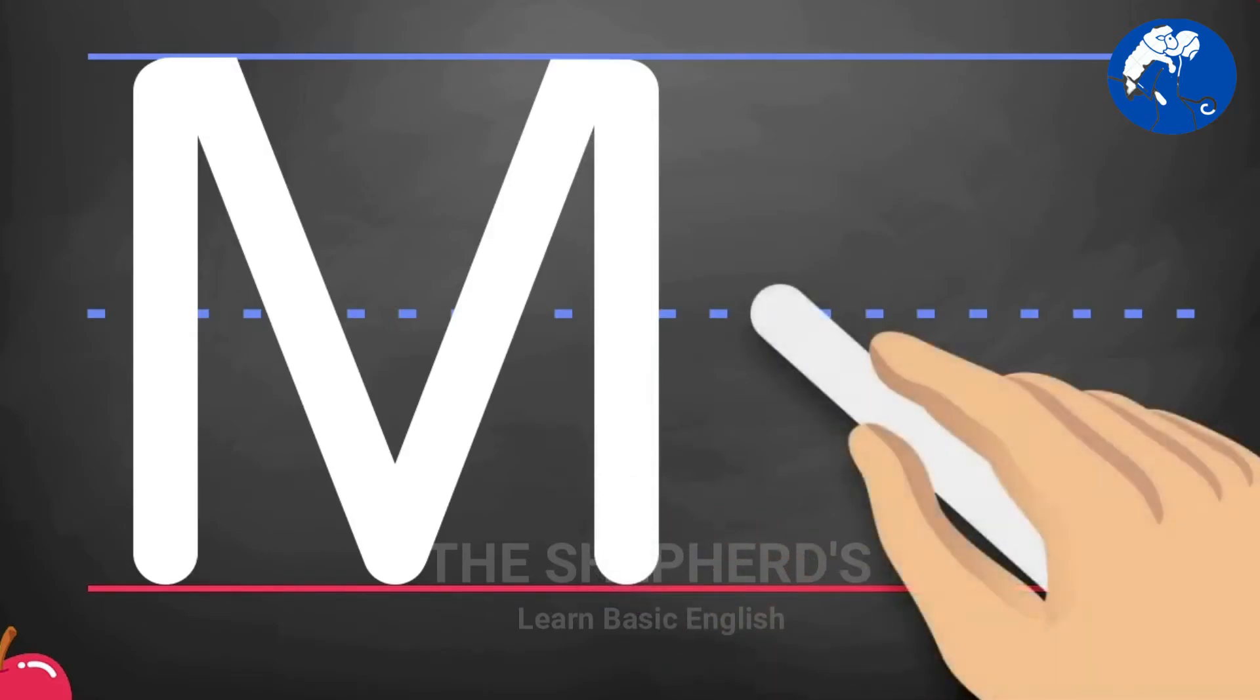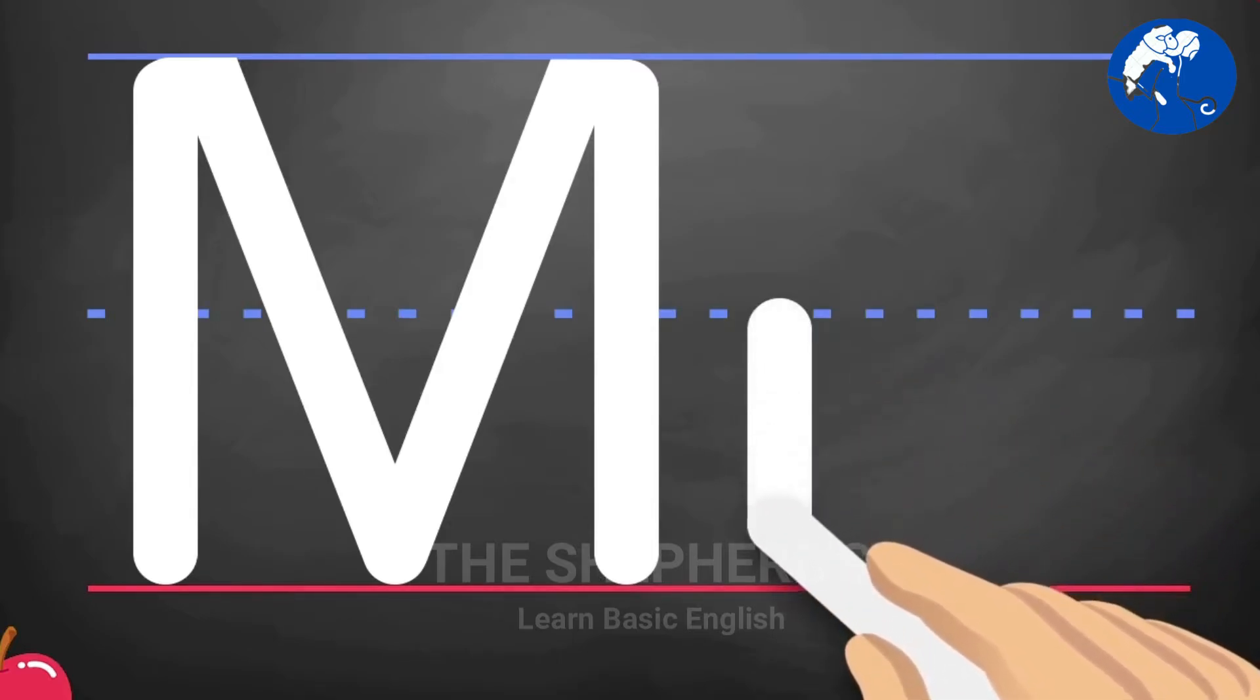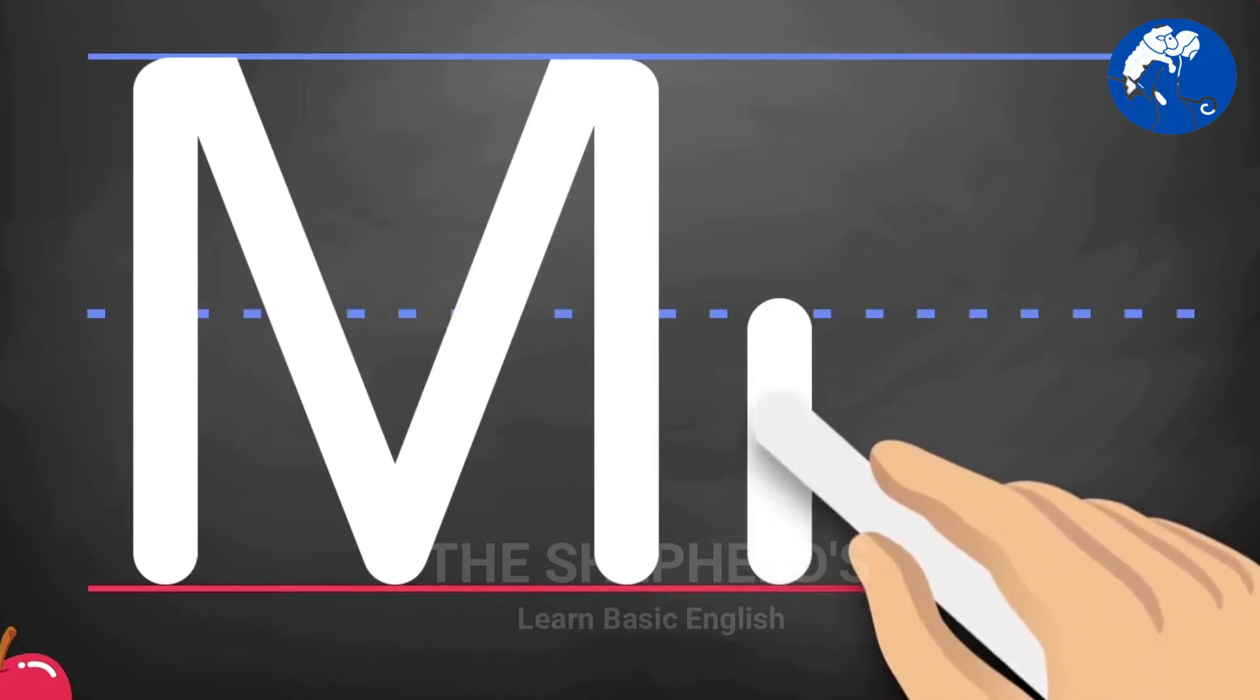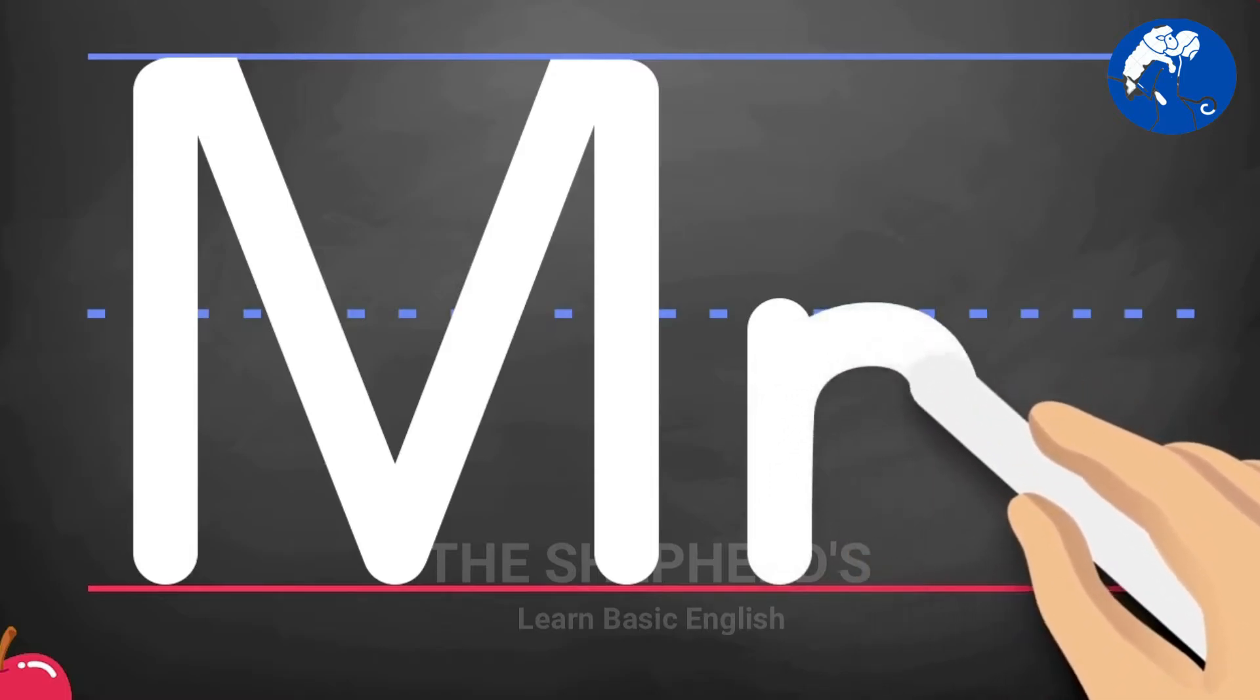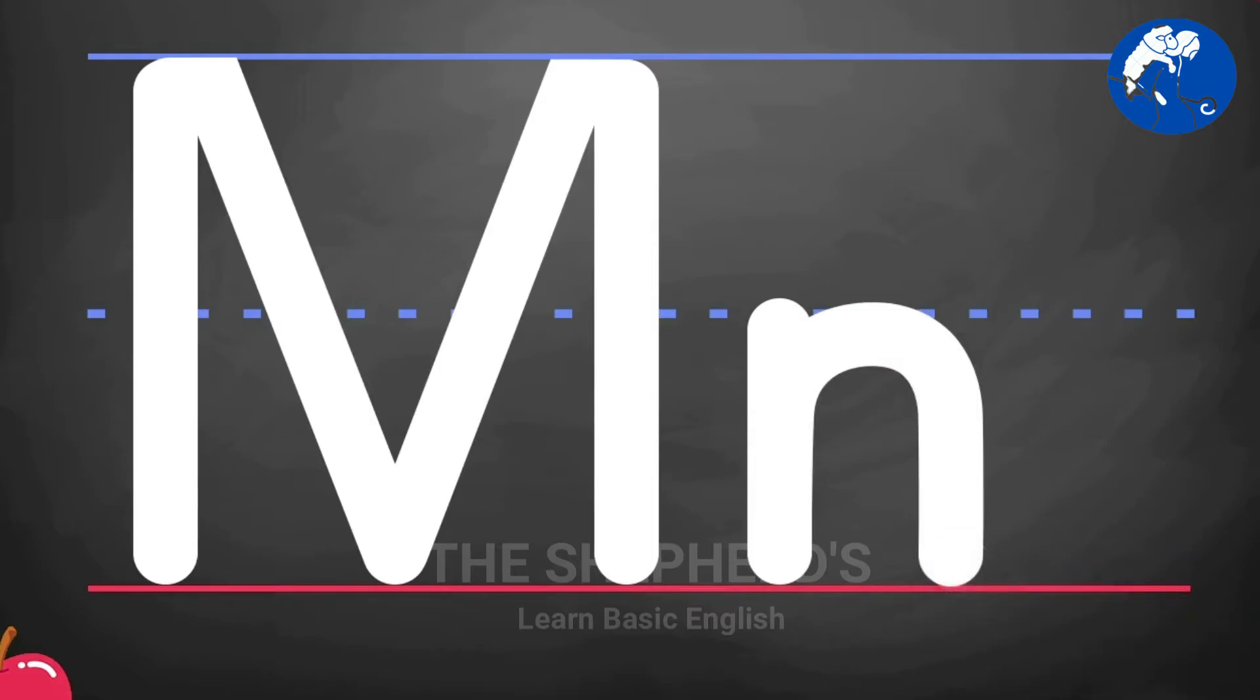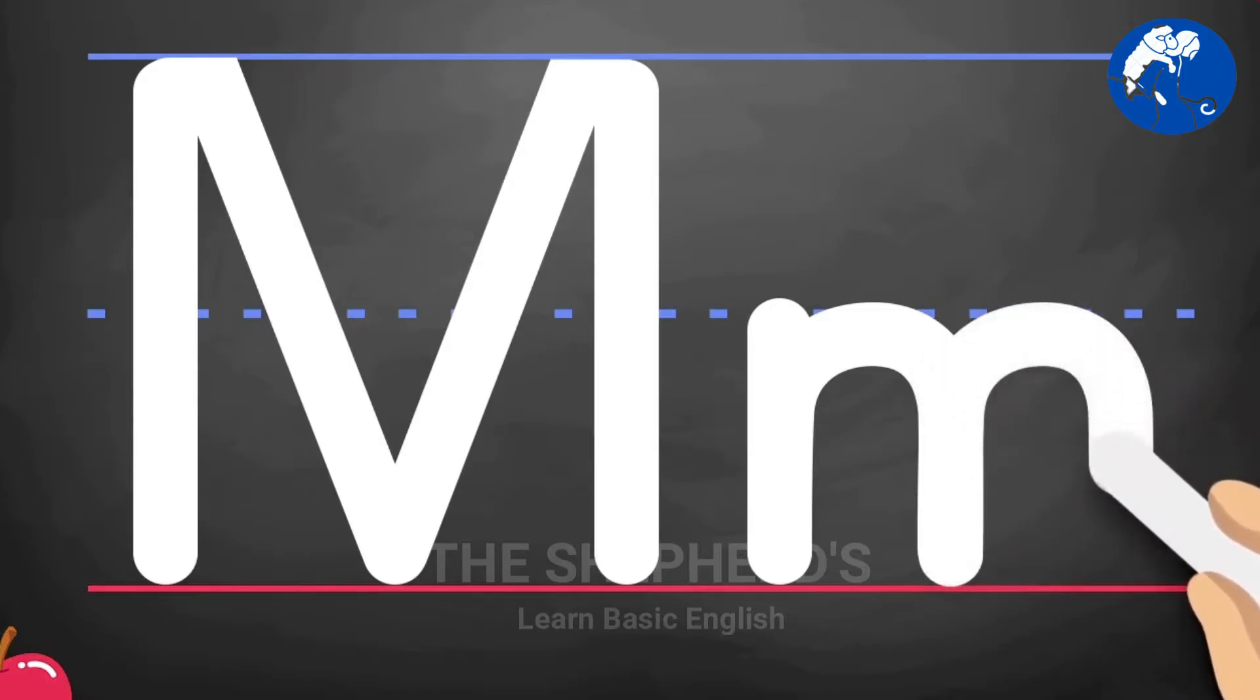Lowercase m: Pull down. Go back to the middle, around, up, over, and down. Exceptional!